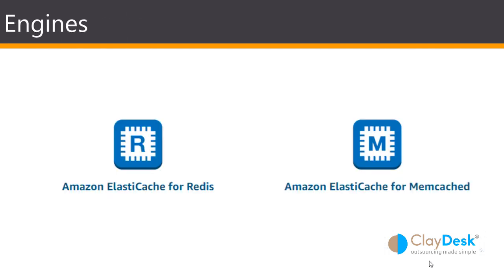The two main engines supported by ElastiCache are Redis and Memcached. Redis is a data store that provides sub-millisecond latency to power internet-scale real-time applications. It's built on open source Redis and compatible with Redis APIs.